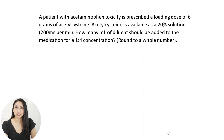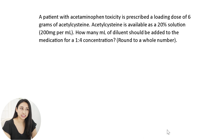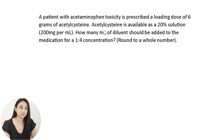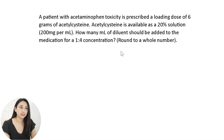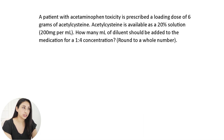The next problem is figuring out how to dilute to a certain concentration ratio. A patient has acetaminophen toxicity and is prescribed a loading dose of six grams of acetylcysteine. Acetylcysteine is available as a 20% solution of 200 milligrams per milliliter. How many milliliters of diluent should you add to the medication for a one-to-four concentration? I'll first figure out how many milliliters of medication the patient receives, using the D over H times Q formula.